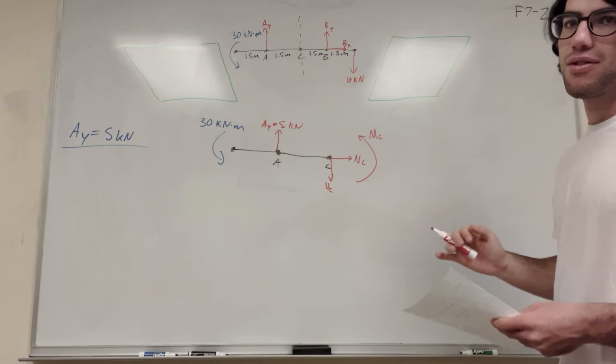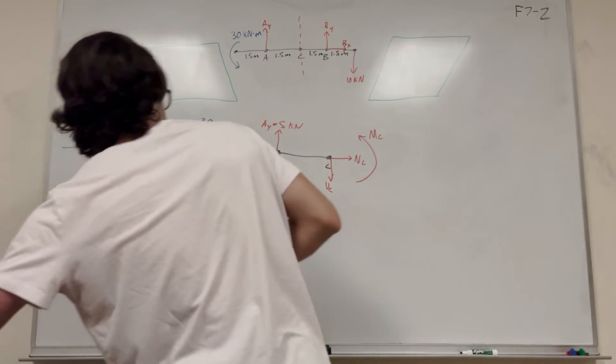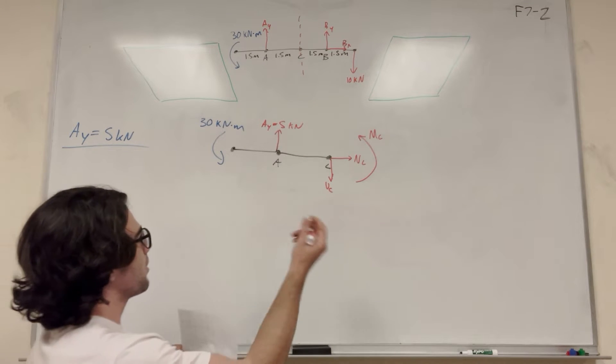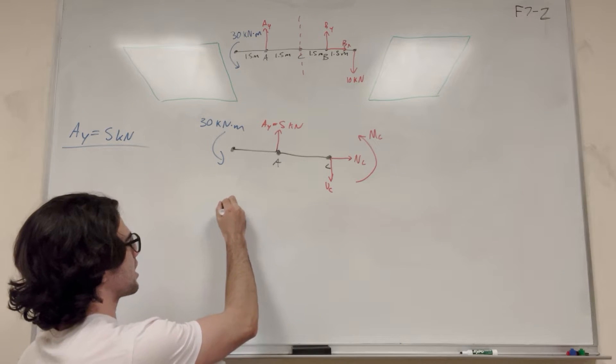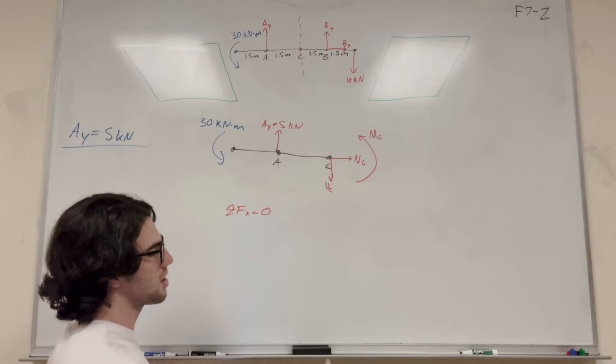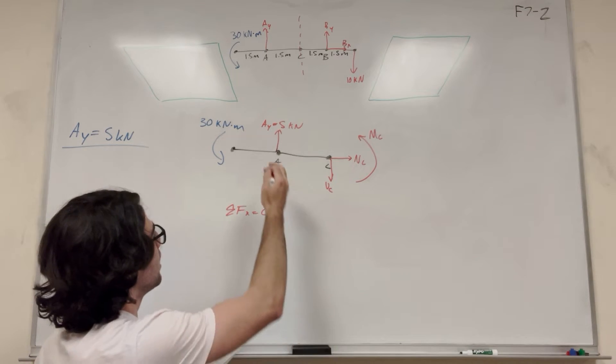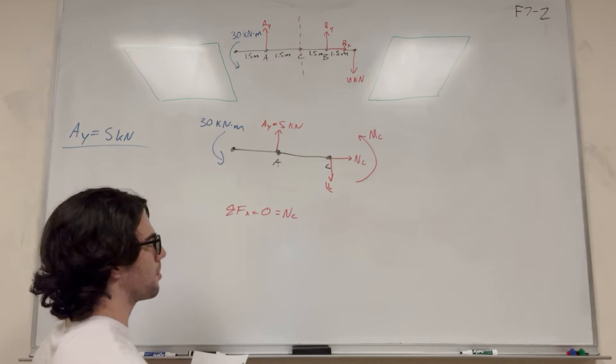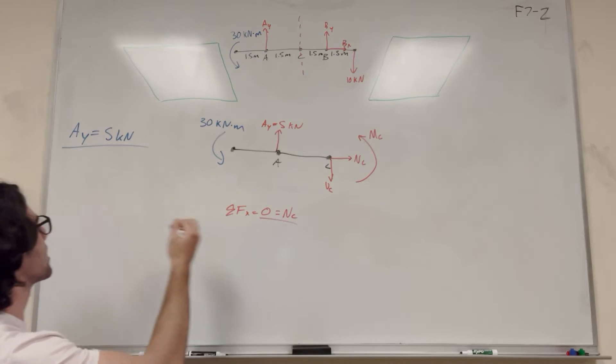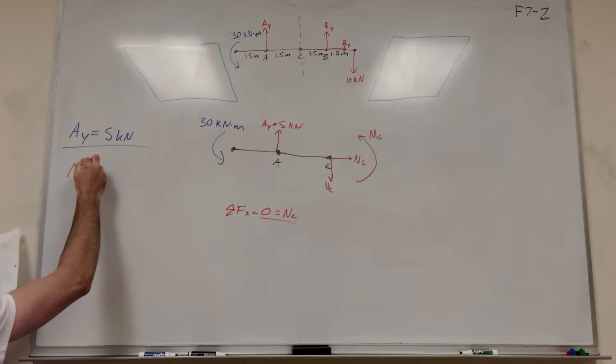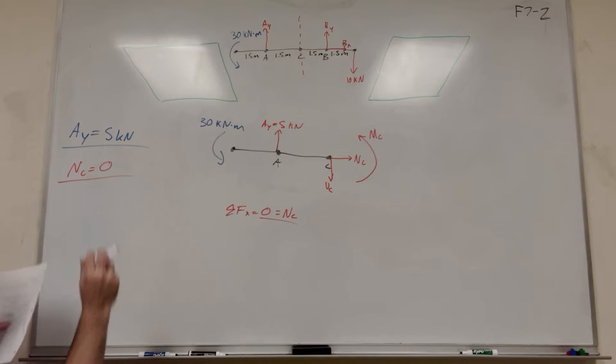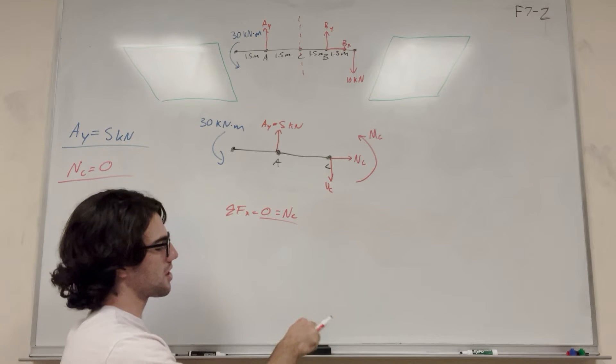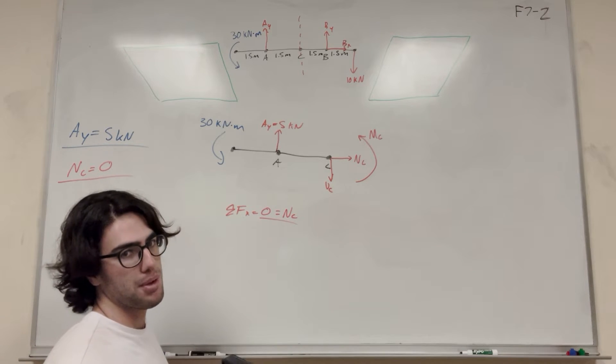And now it's just taking sum of the forces and moments. So let's go ahead and do all that. So this is the easiest part. Getting to here is the hard part. So now let's find normal of C. So let's take sum of the forces in the X. We know sum of the forces is equal to zero, we're at equilibrium. So we have only N_C. So only normal is acting in the X direction, and that tells us that normal is equal to zero, because it's the only force acting in the X direction.